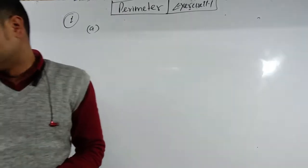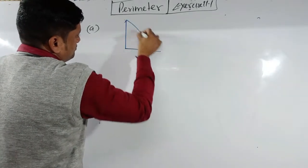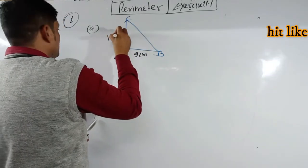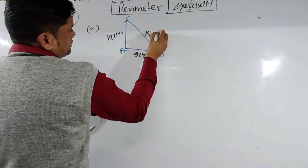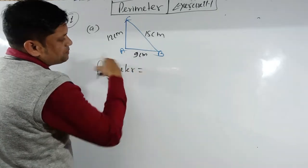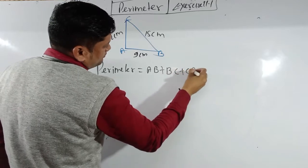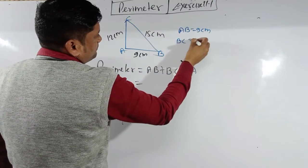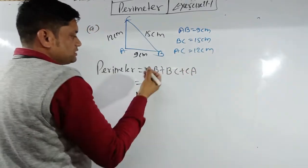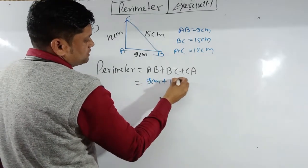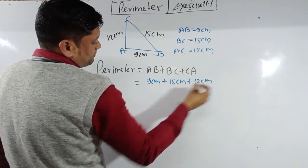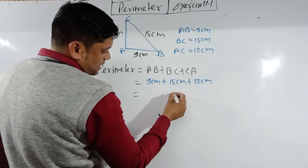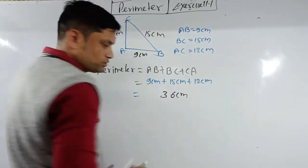Question 1a has a triangular shape. The sides are AB = 9 cm, BC = 15 cm, and CA = 12 cm. Perimeter equals the sum of all sides: AB + BC + CA = 9 + 15 + 12 = 36 centimeters. That is your answer.